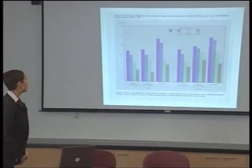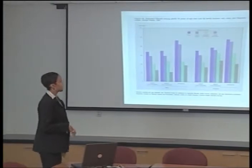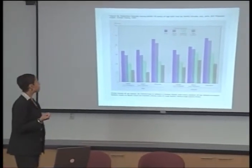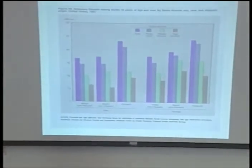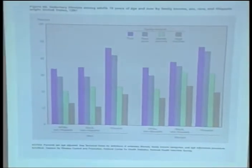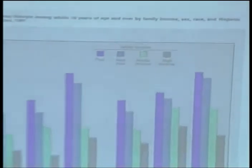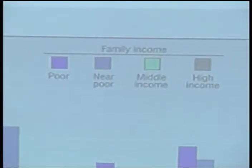Going back to the obesity example, sedentary lifestyle is one of the primary risk factors for obesity. This slide shows data on sedentary lifestyle among adults ages 18 and older, grouped by family income as an indicator of socioeconomic status, sex or gender, and race and ethnic origin.